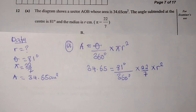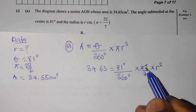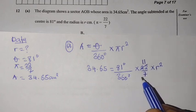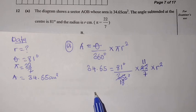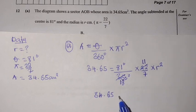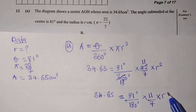From here, what are we going to do? We can say 2 here, 2 in 22 is 11, then 2 in 360 is 180. So we have 34.65 equals 81 over 180 degrees times 11 over 7 times R squared. I'm just breaking the numbers so that you follow through nicely.